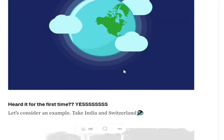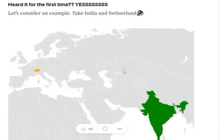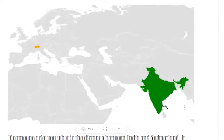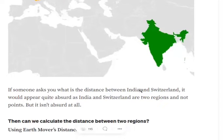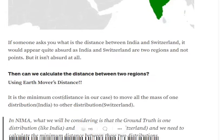It is something that many of you might not have heard of, so let's take an example. Consider this particular image where this yellow region is Switzerland and this green region is India. What we wish to do is calculate the distance between the two countries. You might have calculated distance between two points, but how do you calculate the distance between two regions?